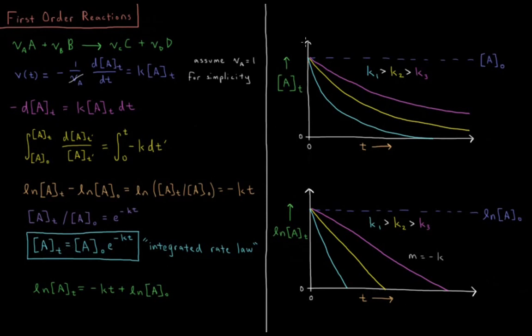All right, so if we look on some plots over here, if we look at A of t versus time, we start out at t equals zero at A naught. And if we have some reaction with a large rate constant, k1 is fast, it's going to quickly decay and then quickly approach a concentration of zero.